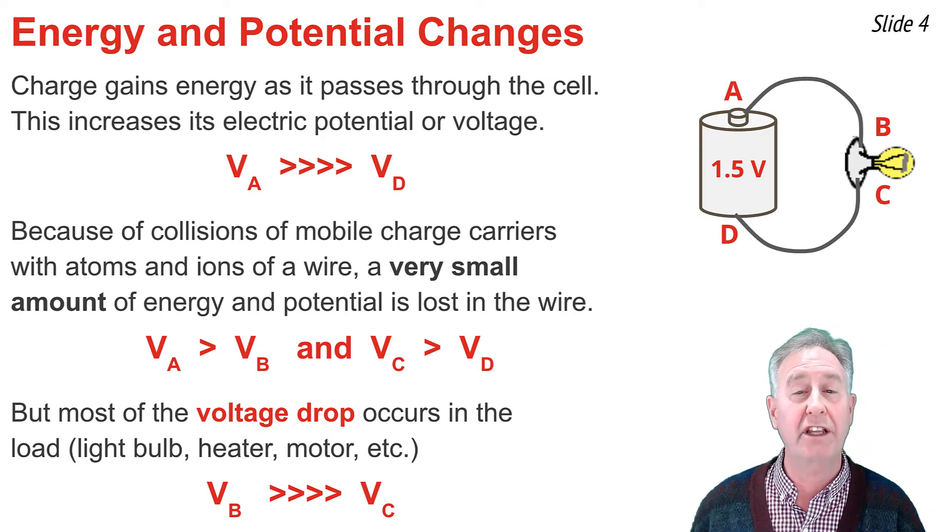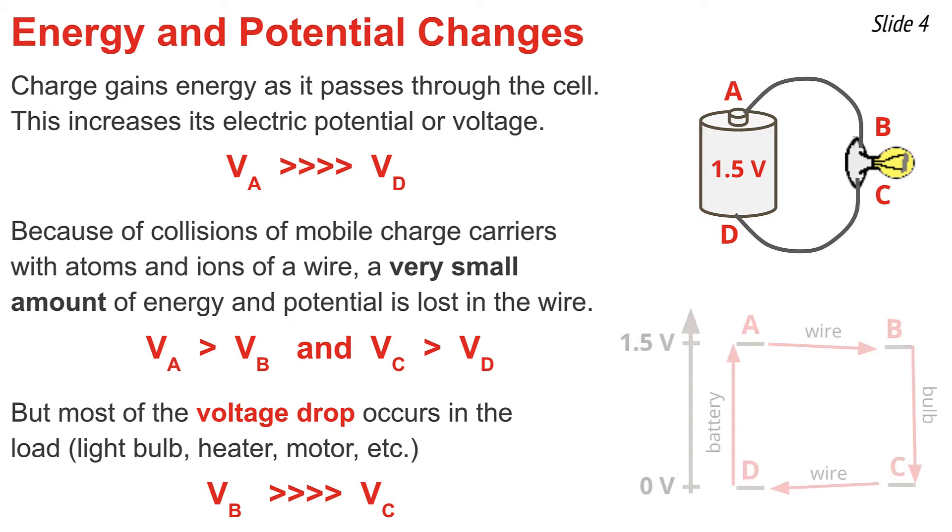We can represent these changes in electric potential by an electric potential diagram. Here you see a diagram shown for the circuit above. You'll note on the diagram that the level of electric potential at A and B is very similar, with B being slightly less. And the electric potential level for locations C and D is also very similar, with D being slightly less. But the big drop in electric potential occurs from B to C because the load is located in that location. It's the bulb that transforms this electrical energy to light energy and thermal energy causing the large voltage drop. And from location D to A, that's where there's a gain in electric potential as the battery does work upon the charge.